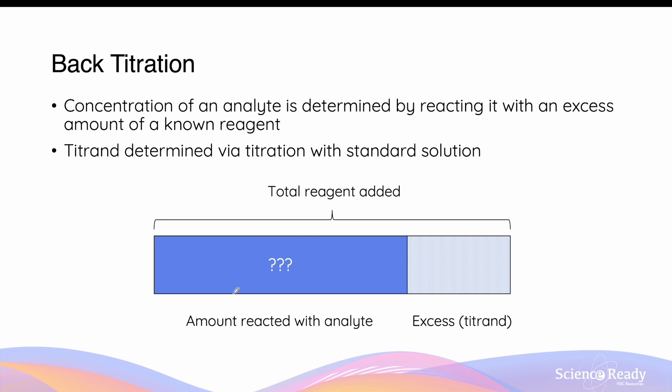So we have an unknown amount of analyte that we're trying to determine the quantity of, and we are adding a known amount of a particular reagent in excess, such that some amount is left over.